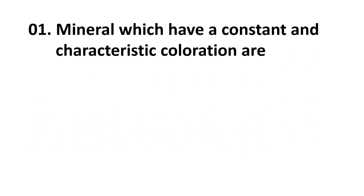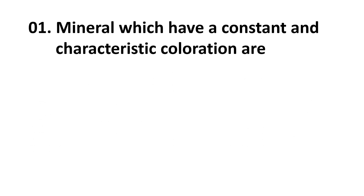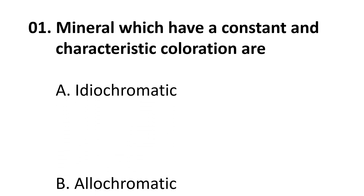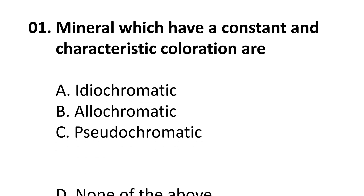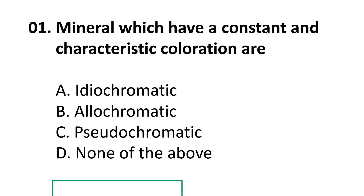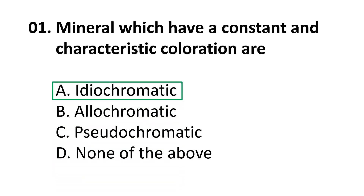Question 1: Minerals which have a constant and characteristic coloration are known as — A. idiochromatic, B. allochromatic, C. pseudochromatic, D. none of the above. The correct answer is A, idiochromatic. Idiochromatic minerals have a constant and characteristic coloration, whereas allochromatic minerals change color with impurities.